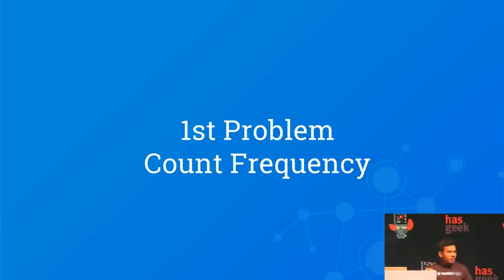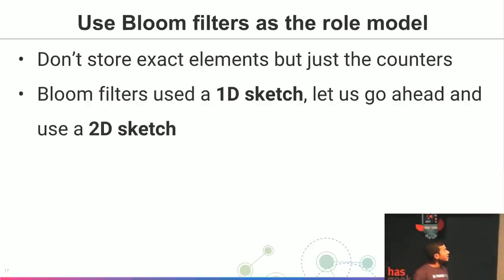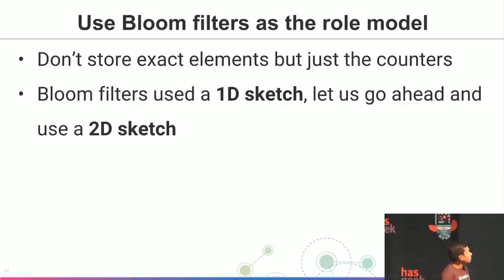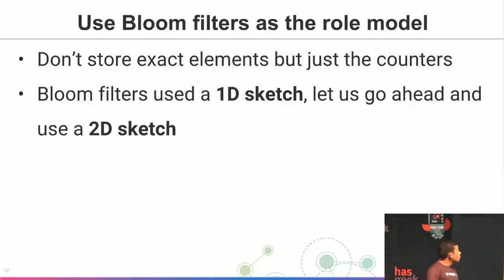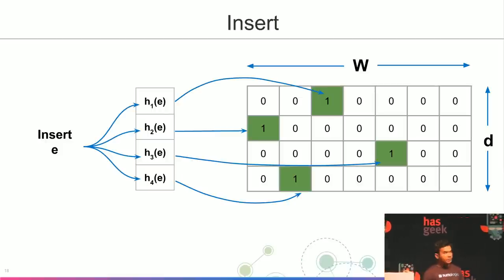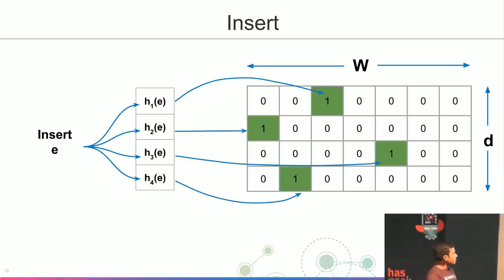Coming back to the problem of counting frequencies: using Bloom filters as a role model, we will not store the exact elements but just counters. Previously it was a membership operation — 0 or 1 — now we store integer or long counters. Bloom filters used 1D sketches; we improve upon that and use 2D sketches. The data structure has d bit arrays of size w, and d hash functions.